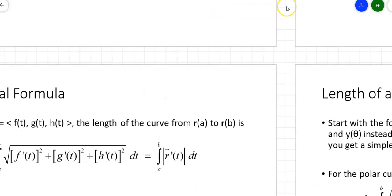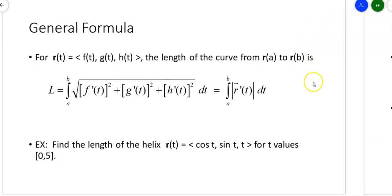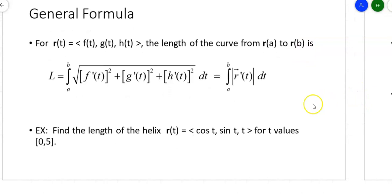We used a Riemann sum to sum all those L sub k's and found the length of the whole curve. If the function was defined parametrically, we needed the derivative of x with respect to t and the derivative of y with respect to t — it looks very much like the Pythagorean theorem. Find the length of one little piece, use an integral to find the length of the entire curve. So what do we do when something is a vector-valued function and we want the length of that curve? Here is the general formula: assuming you have components f(t), g(t), h(t), the length on the interval from a to b is the integral of the square root of f′ squared plus g′ squared plus h′ squared — that's the integral of |R′(t)|.